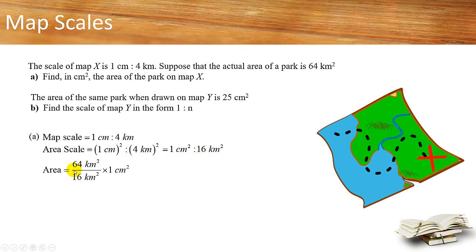Since the actual area is 64 km², to find the area on the map, you simply take this, divide by this, times 1. So 64 divided by 16, you will get 4 cm². So this will be the answer for part A.